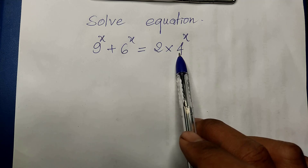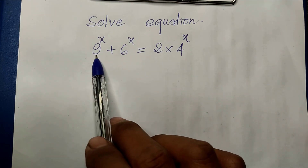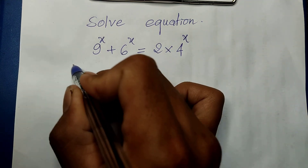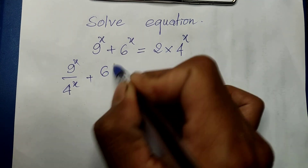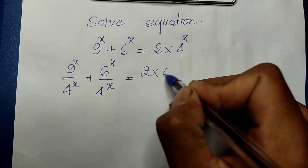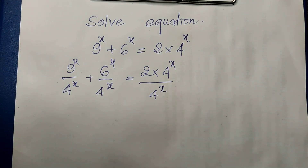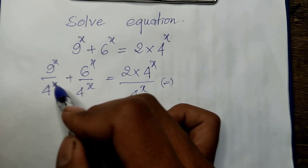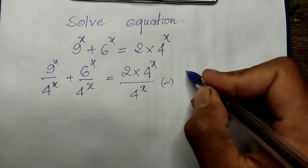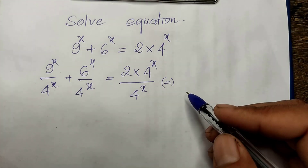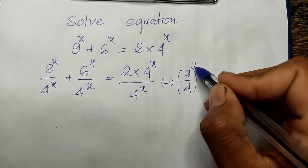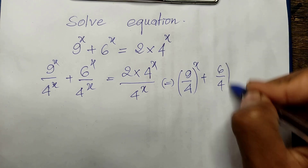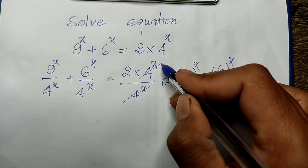We also divide it with 9^h. So we get 9^h divided by 4^h, plus 6^h divided by 4^h, equal 2 × 4^h divided by 4^h. We can take each with the same power 8 into one exponent. So we get (9/4)^h plus (6/4)^h, and the right side simplifies to 2.